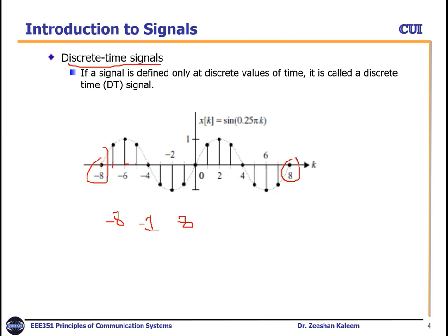So from minus 8 to 8 with a step of 1, if we put these values into sin(0.2525πk) — because the time is discrete, we represent it by k — we can calculate the magnitude of a discrete signal. For example, putting k = minus 8: sin(0.2525π × (−8)). After calculating this you will get some value.